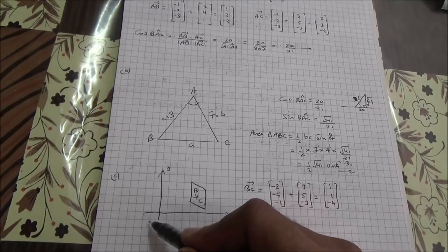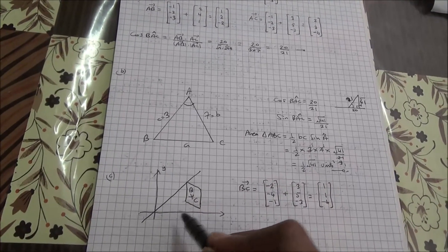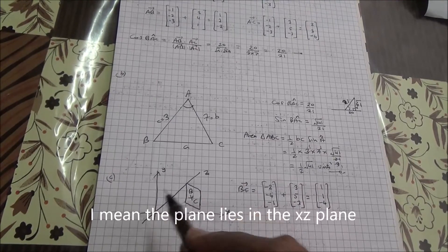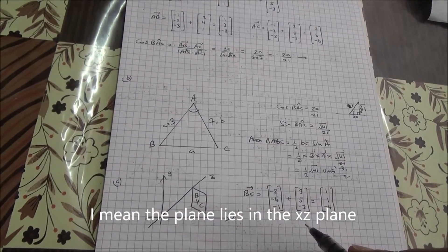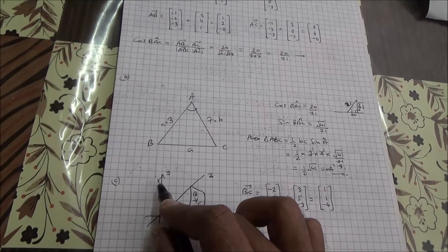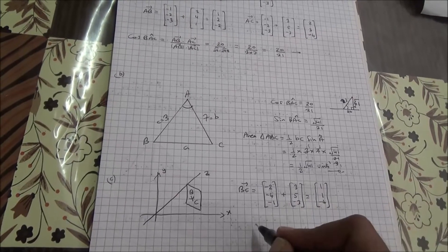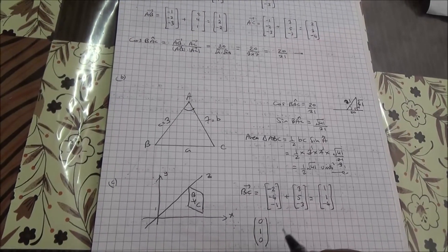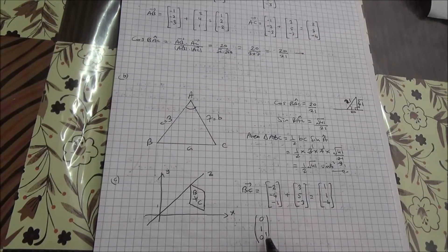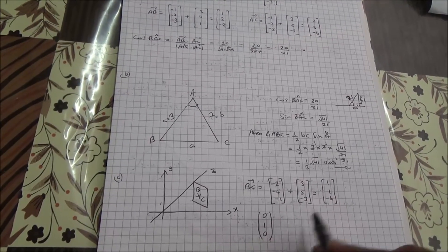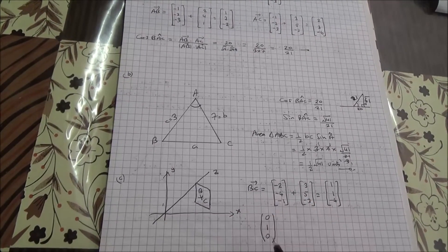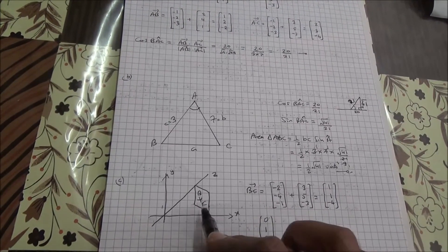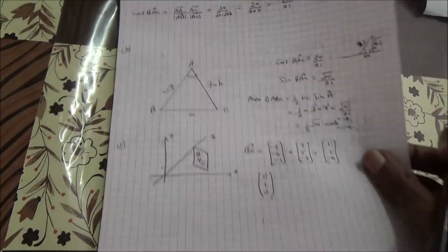Very important. Now, since the plane is parallel to the y-axis, we can see the plane lies in the x-z plane orientation. Therefore another direction vector can be 0, 1, 0 — along the y-axis. So this is the second direction vector. Using this fact that the plane is parallel to the y-axis, generating this vector coupled with the vector BC we just found, we can find the equation of the plane using the matrix method.